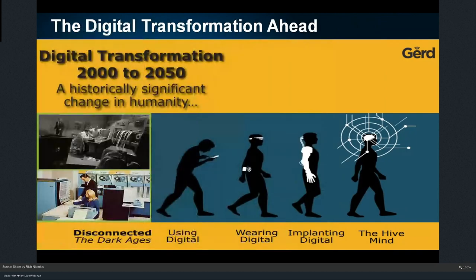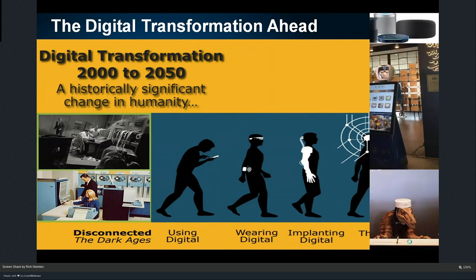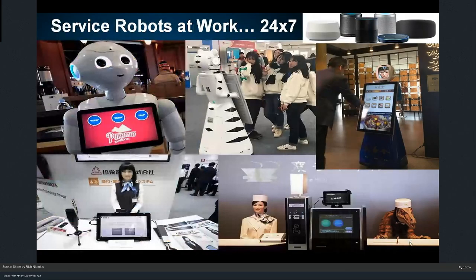We're moving from the point where it used to be a mainframe to where that mainframe's in our pocket using digital. More and more we're wearing digital; a few people are already implanting digital. And with prosthetics this is very advanced. We're using the hive mind to share that information across the globe. Robots are being leveraged innovatively right now — to meet you at a restaurant, show you the menu, or direct you to a meeting. Honda's robot can actually take you to a meeting, or check you into a hotel.